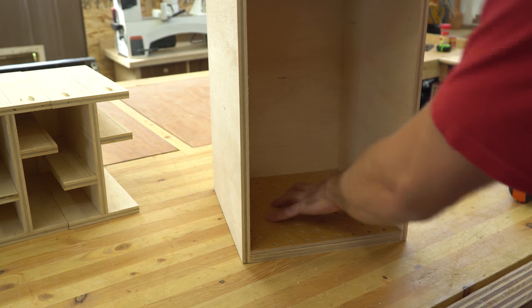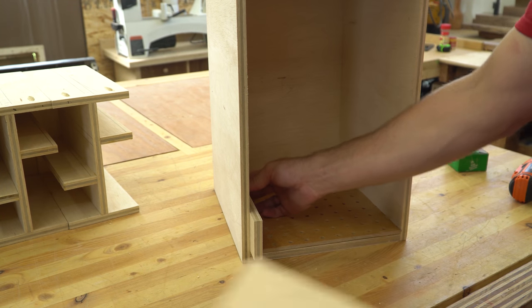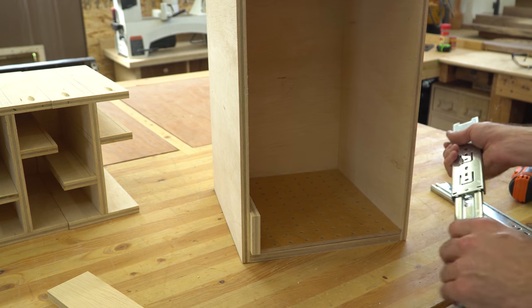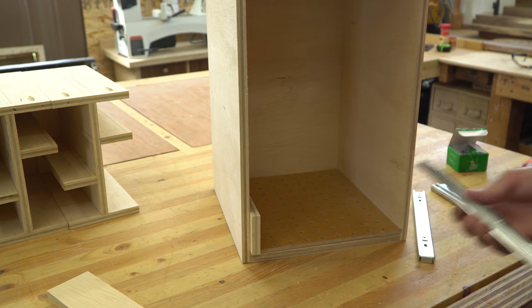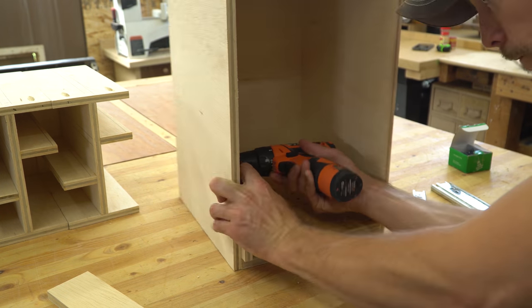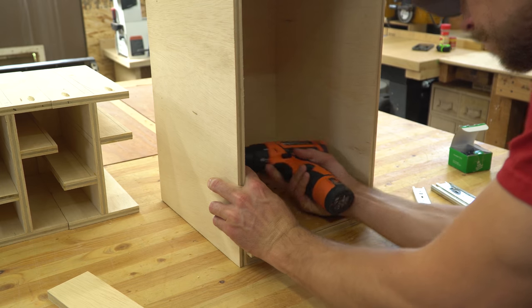I keep calling these things drawers, and in my mind that just isn't quite right. Maybe sliders or just slides is more appropriate. Calling them drawers is easy though, because when installing the rails, the process is identical to putting drawer slides in a cabinet, just on a smaller scale.